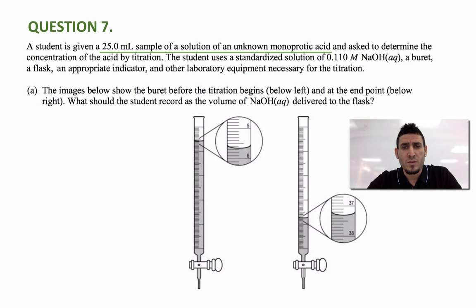The student uses a standardized solution of 0.110 molar sodium hydroxide, a burette, a flask, an appropriate indicator, and other laboratory equipment necessary for the titration. The first question is, the images below show the burette before the titration begins, which is the one to the left, at the end point, which is the one to the right. Now what should the student record as the volume of NaOH delivered to the flask?